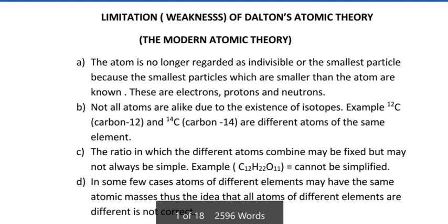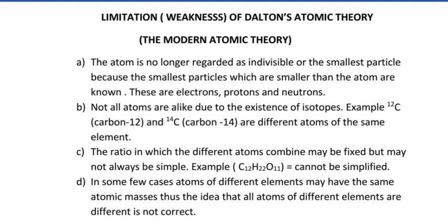We have limitations or weaknesses, called the modern Dalton's atomic theory. The first thing is that the atom is no longer regarded as indivisible, because it can be destructed, divided into smaller particles - the smaller particles which are making up atoms: electrons, protons and neutrons. Not all atoms are alike due to the existence of isotopes.